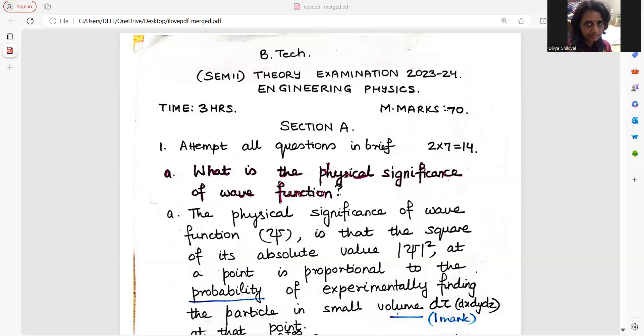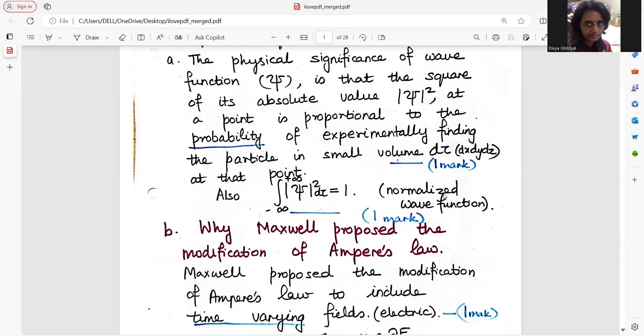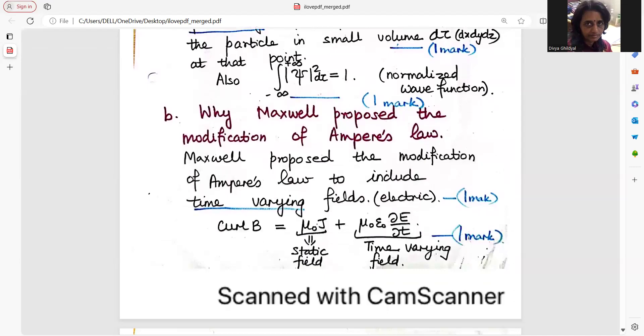When you are attempting Section A, the first question was what is the physical significance of wave function? The correct answer for this is that the square of its absolute value at a point is proportional to the probability of finding that particle, and the wave function should be a normalized one. You get one mark for this probability and one mark where you are mentioning that it is normalized. Then, why Maxwell proposed the Ampere's law? Very common answer.